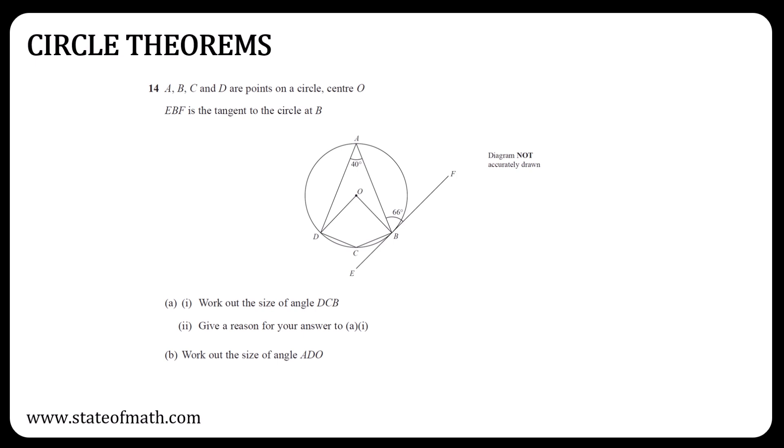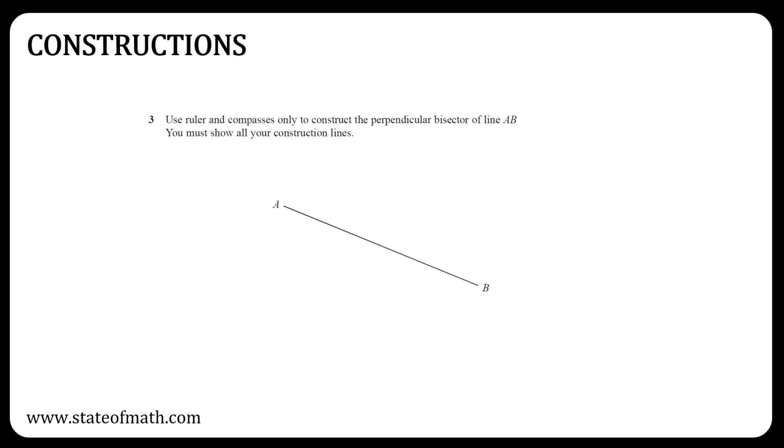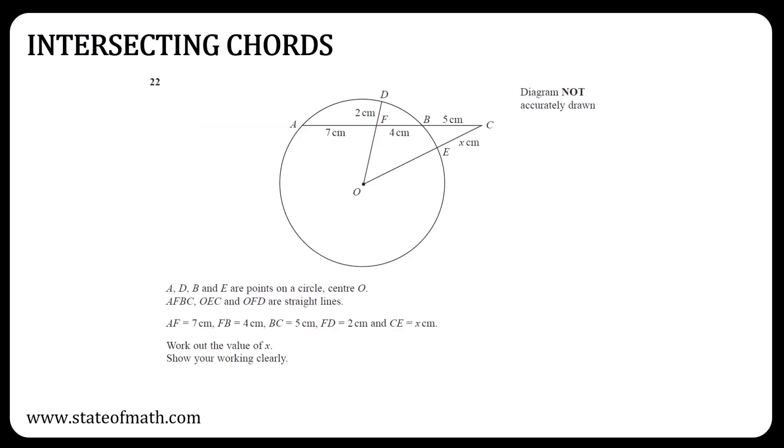I was really surprised not to see a question involving circle theorems in Paper 1H, so it is a must-revise topic. It's so important that we are including two questions in our revision handout. Constructions is a topic that does not appear very often, and the times it did appear it was either a perpendicular bisector question or an angle bisector.